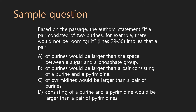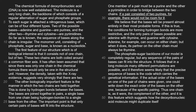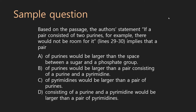Based on the passage, the author's statement — 'if a pair consisted of two purines, for example, there would not be room for it' — implies that a pair... so essentially we're being asked what does this line imply, what can we infer from this line? When I read it by itself, I have no idea what it's talking about. If a pair consisted of two purines, there'd be no room for it — no room for the pair? My first inference would be that two purines are too big for wherever they're supposed to go. Now if one of those answer choices says that, I'm already done.